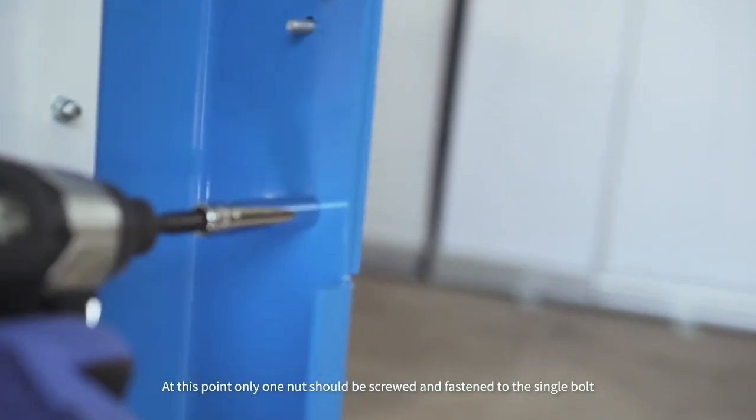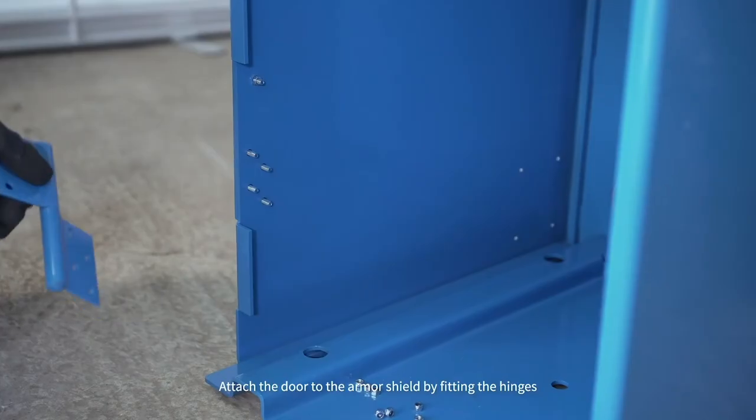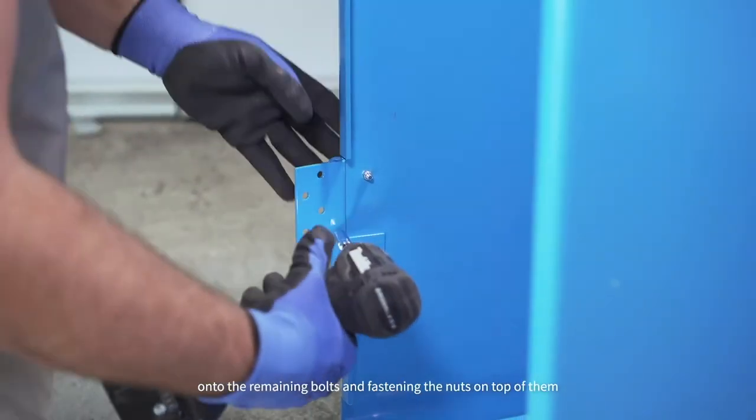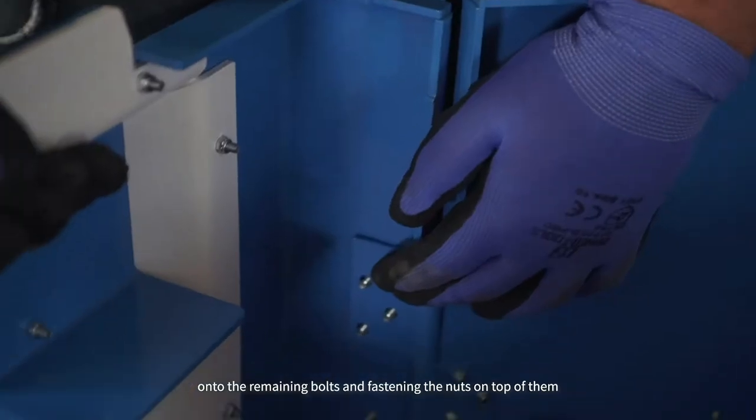At this point, only one nut should be screwed and fastened to the single bolt. Attach the door to the armor shield by fitting the hinges onto the remaining bolts and fastening the nuts on top of them.